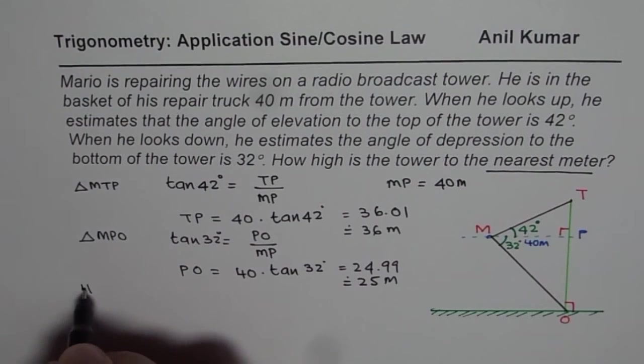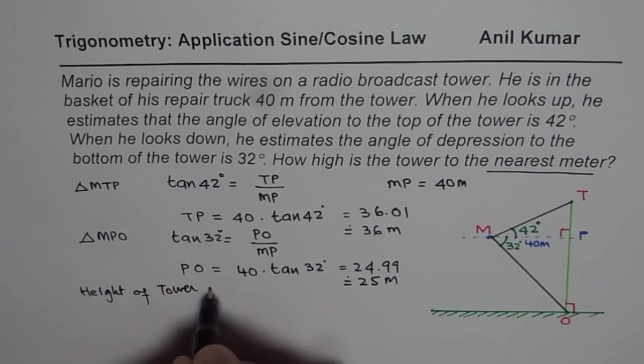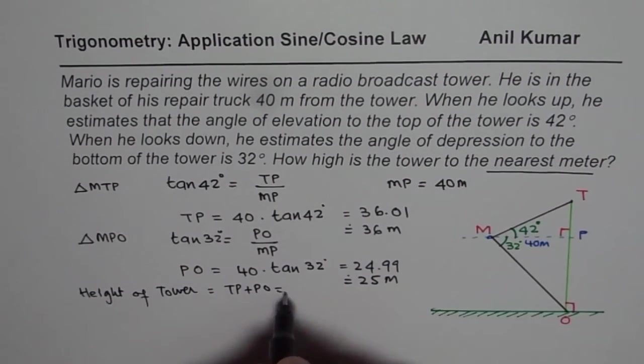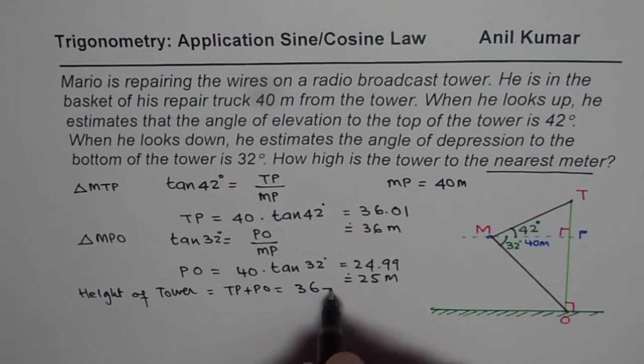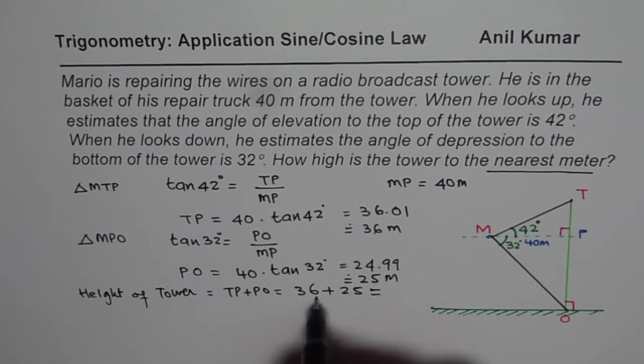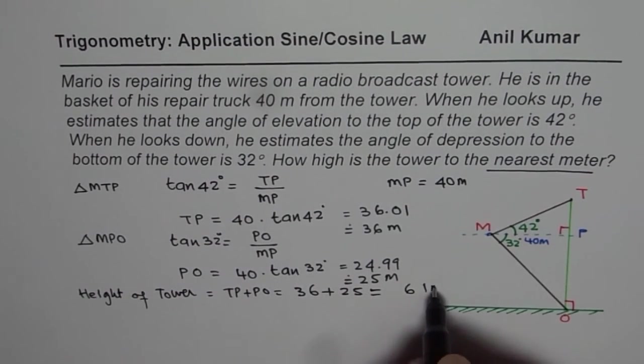Clearly the height of the tower TO is the sum of these two, which is TP plus PO. We can write this as 36 plus 25, just add them up. 6 and 5 is 11, so 61 meters.